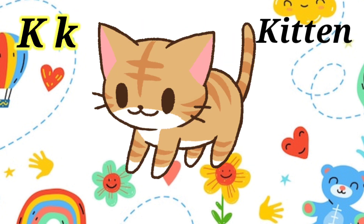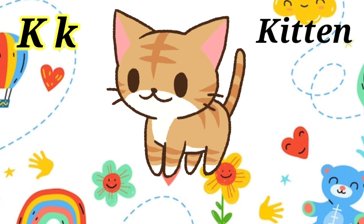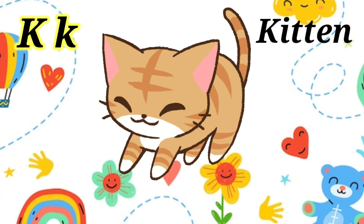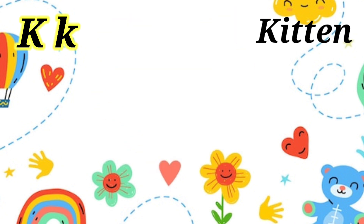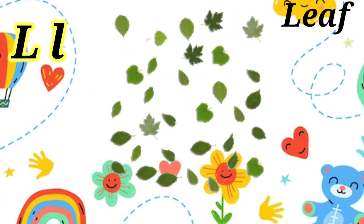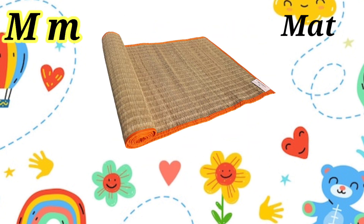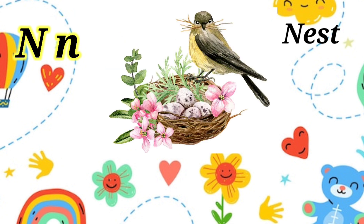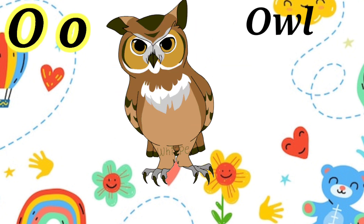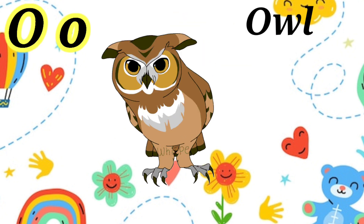K for Kitten, L for Live, M for Mat, N for Nest, O for Owl.